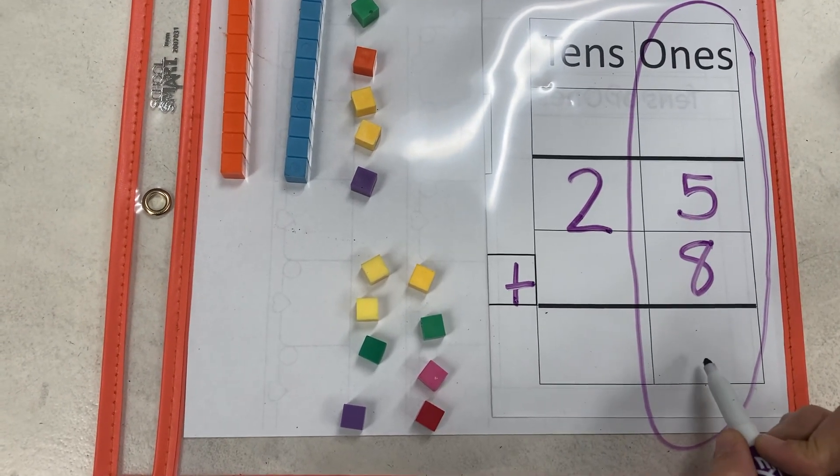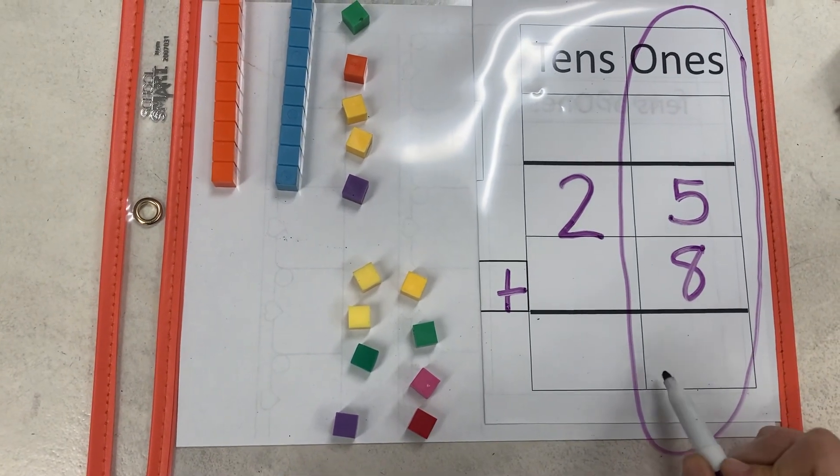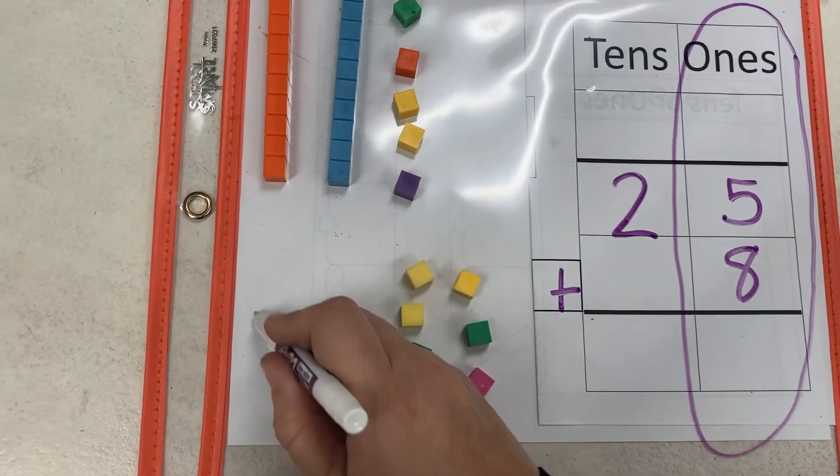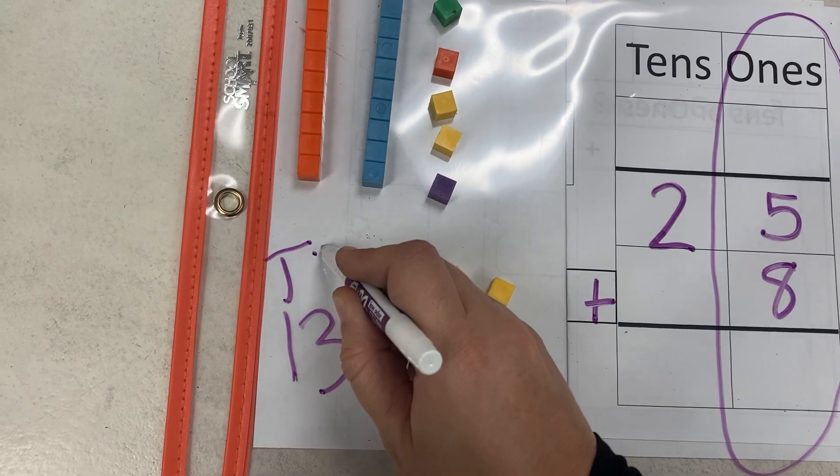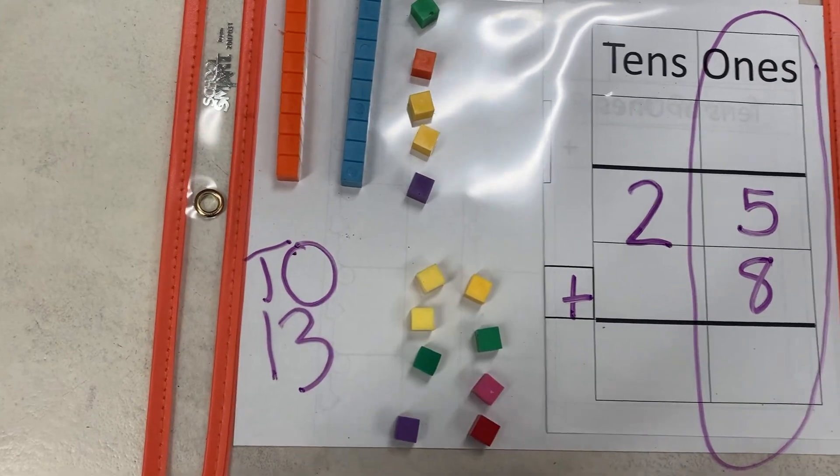Oh no, I cannot write 13 in the ones place. 13 is a two-digit number. 13 is one group of 10 and three extra ones.